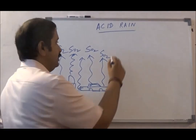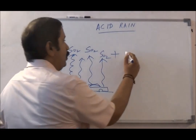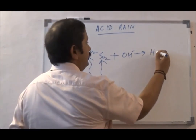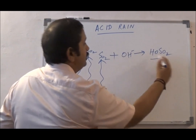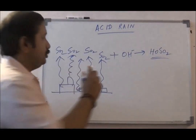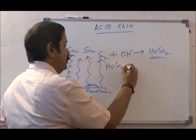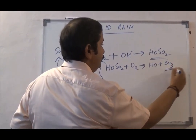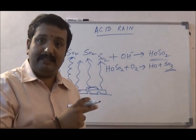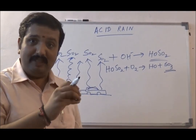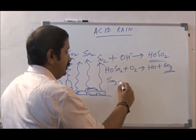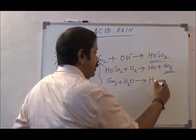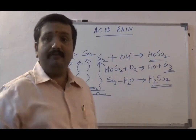This sulphur dioxide mixes with OH radicals in the atmosphere to give HO + SO2, an intermolecular reaction. HOSO2 then combines with oxygen to give HO + SO3, which is sulphur trioxide. Now from here the problem starts — sulphur trioxide is available in the atmosphere and is going to react with the water coming down as rain.